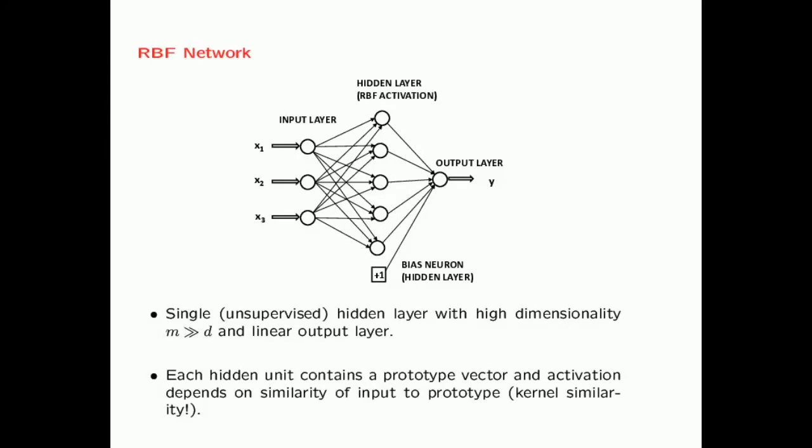The basic structure of an RBF network contains a single unsupervised hidden layer with high dimensionality. It is very often the case that the hidden layer has a dimensionality M which is much greater than the dimensionality D of the input layer. The output layer is often a simple linear output layer — for example, for linear regression. Each hidden unit contains a prototype vector and an activation that depends on the similarity of the input to the prototype.